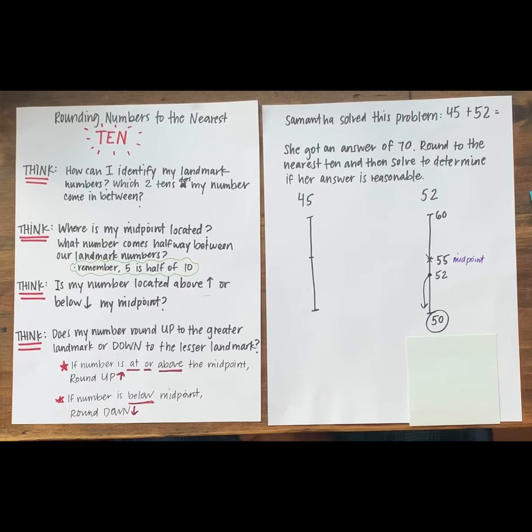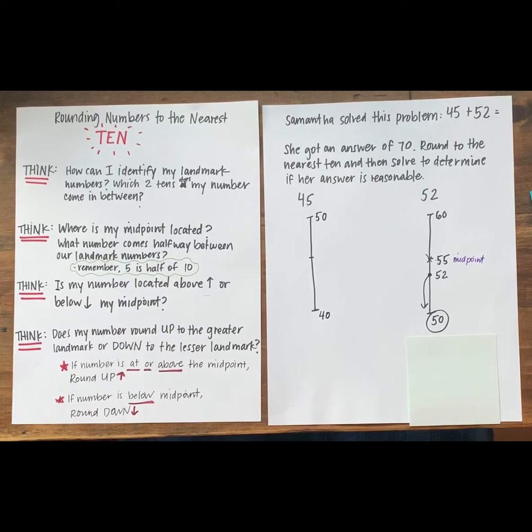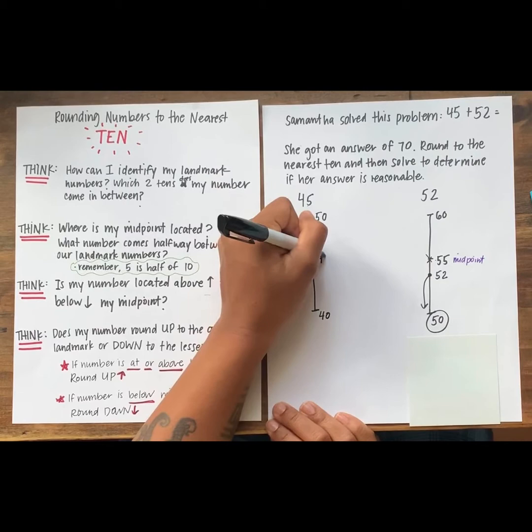This number over here, 45, is tricky. How did you round 45? Say your answer out loud. Which two tens did you use as our landmark numbers? That's right. 40 is our lesser multiple of 10 and 50 is our greater multiple of 10. What is exactly halfway between 40 and 50? Remember, 5 is half of 10. That's right. Our midpoint is 45.